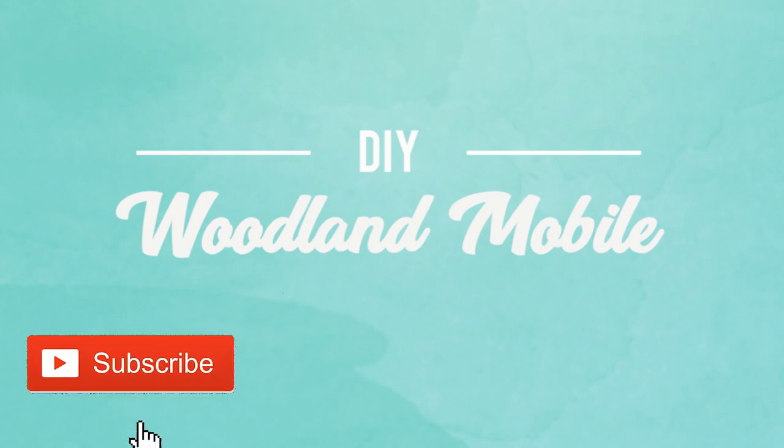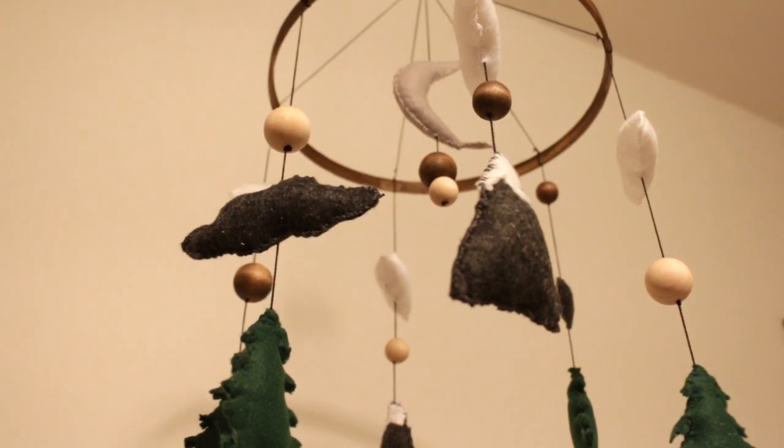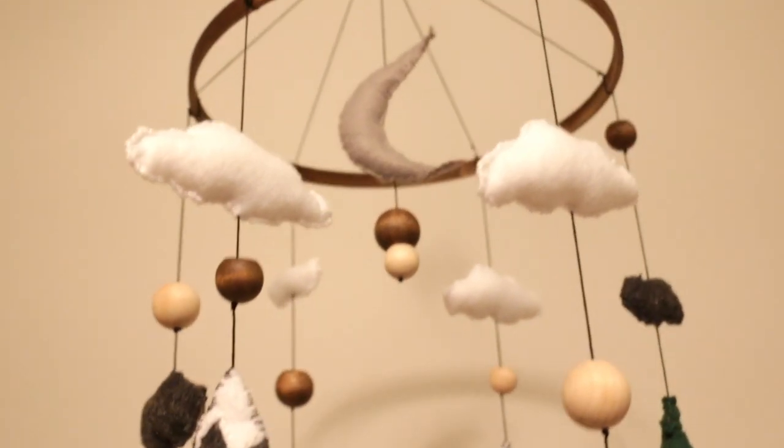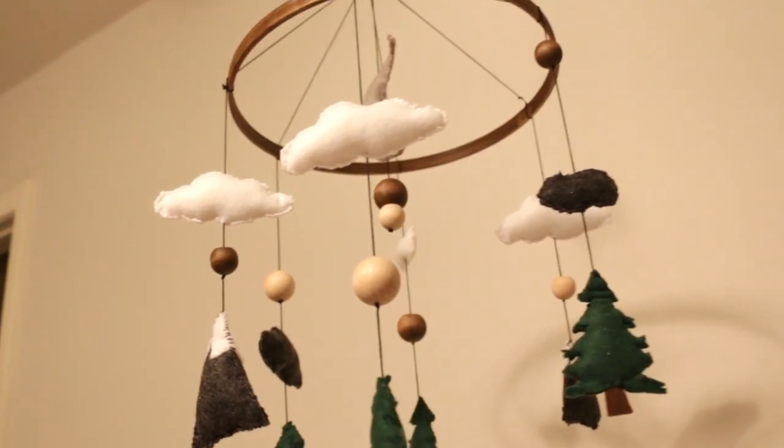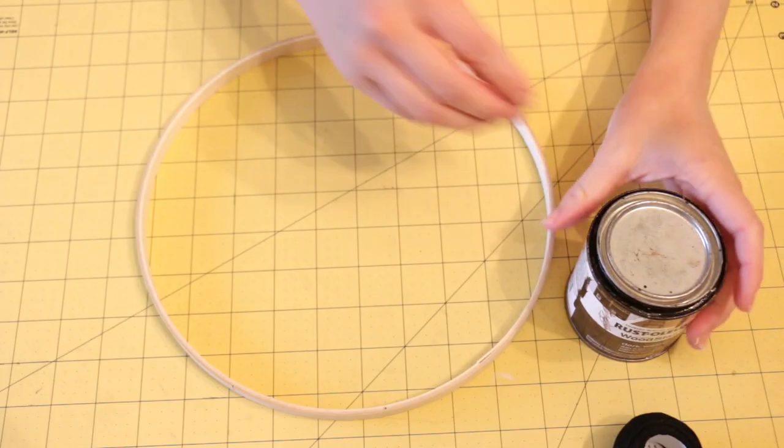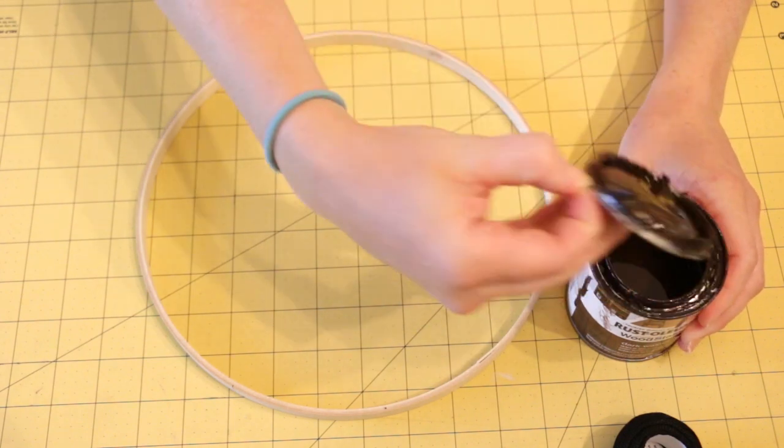Hey guys, welcome back to my channel. Today I'll show you how to create a custom woodland themed crib mobile. I started with a 10-inch wooden embroidery hoop. I stained the hoop a darker brown, but this is an optional step.